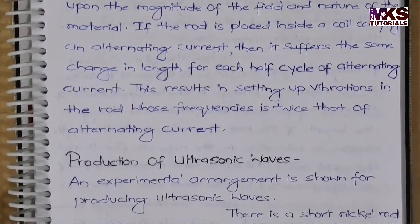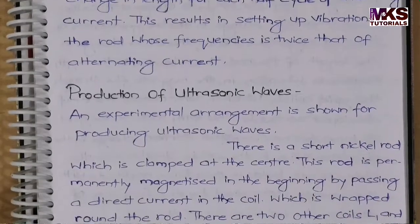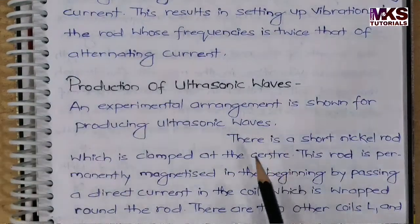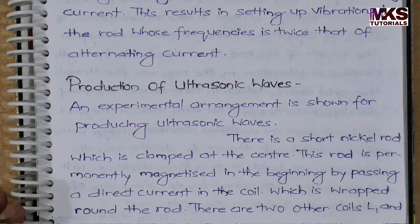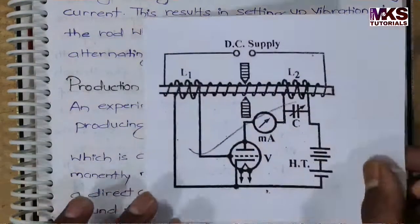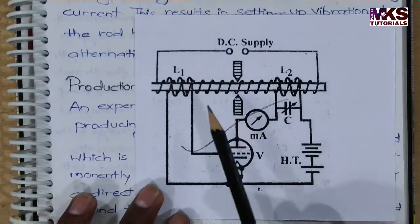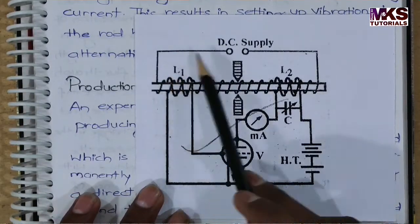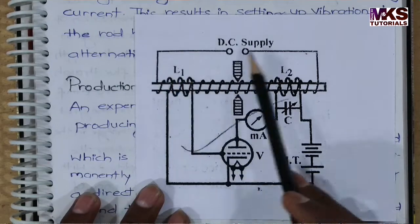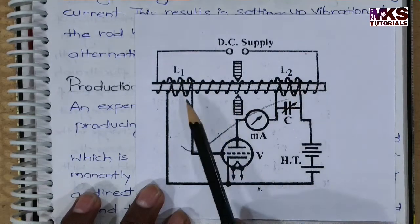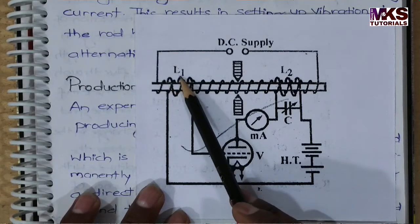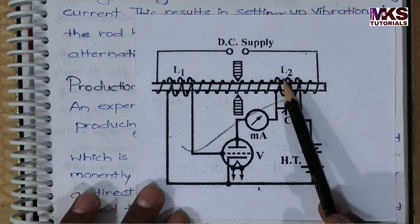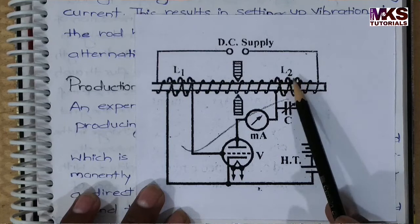Now let's see the production of ultrasonic waves through the magnetostriction method. We have a simple diagram: there is a rod. Around the rod we have a coil with a DC source applied. We also have another coil, L1, wound around the rod.